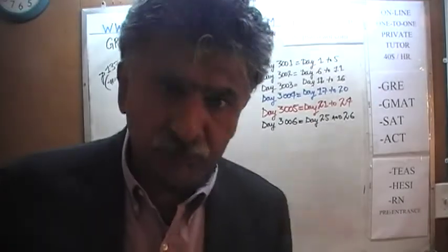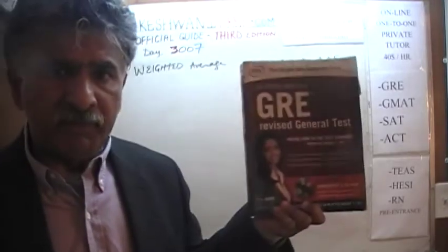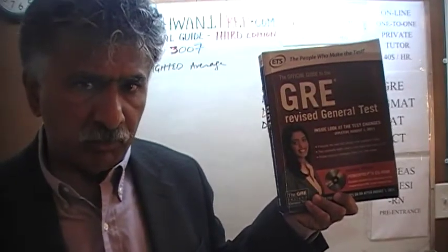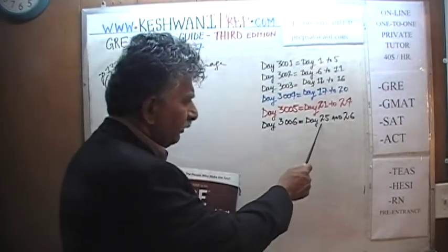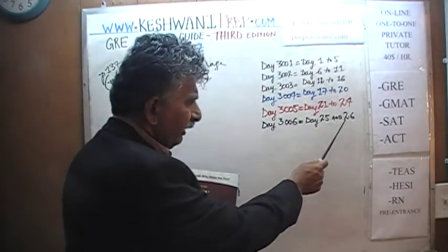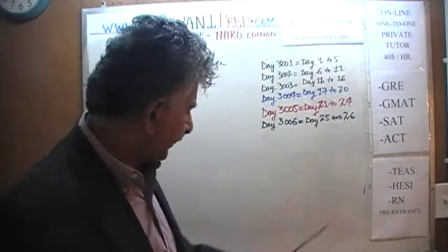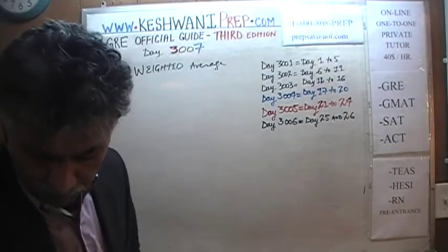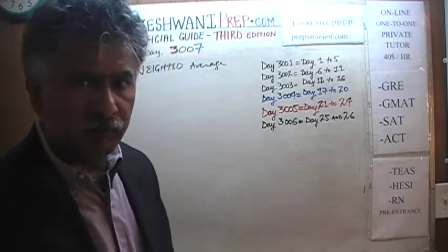If you're interested in watching the original solutions to the problems when they appeared first, in the first edition, you will find all the original solutions at a much slower pace from day number 25 and 26 — the problems that we're going to do today. Just type in GRE math day 25 or GRE math day 26 and you'll find the same problems done at a little bit of a slower pace with a little bit more in-depth explanation.